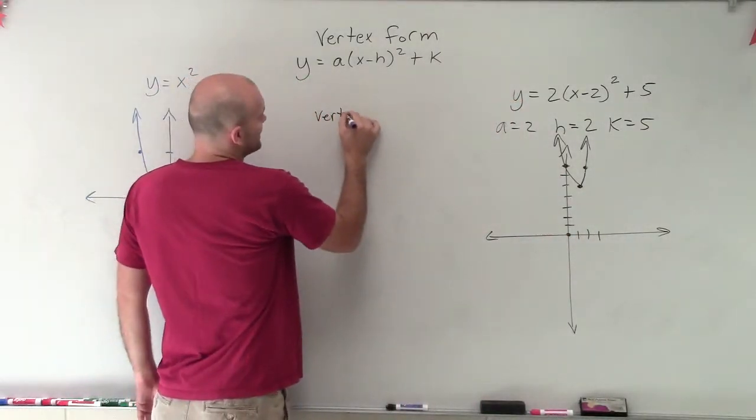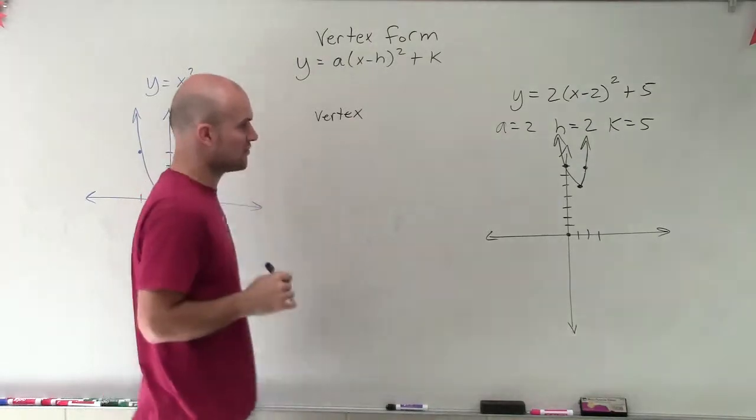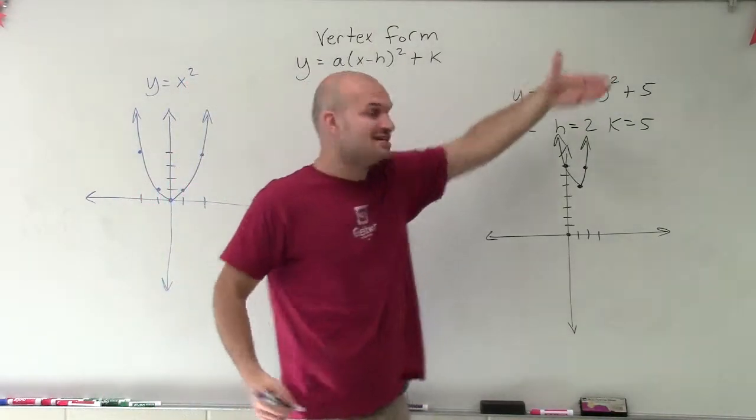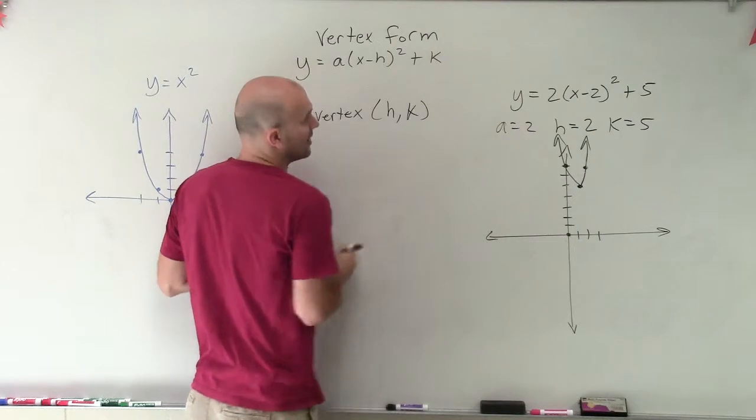So we now know my vertex, which is really cool about vertex form. You can see my vertex is h comma k.